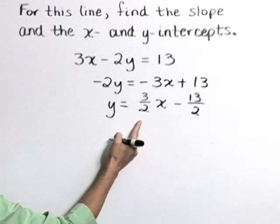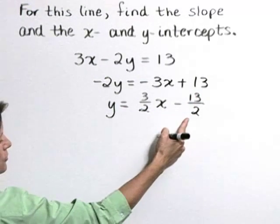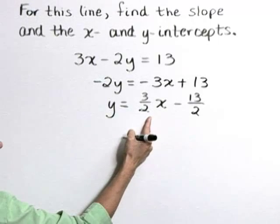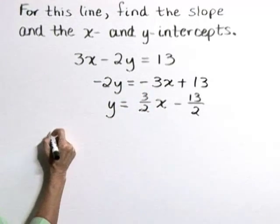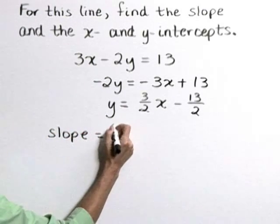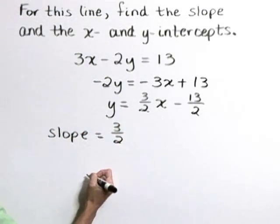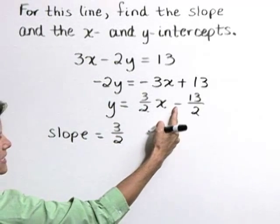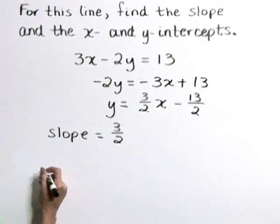Now as we look at this equation in slope-intercept form, we can read the slope very quickly. The slope is 3 halves.